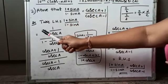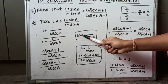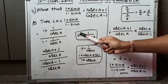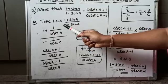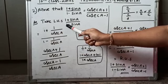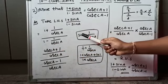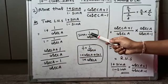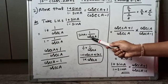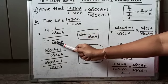The reciprocal formula for sin A is 1/cosec A. So we replace sin A with 1/cosec A. The numerator becomes (1 + 1/cosec A) and the denominator becomes (1 - 1/cosec A).